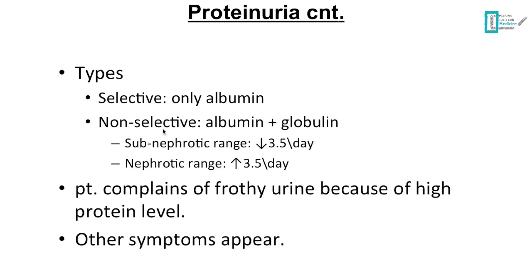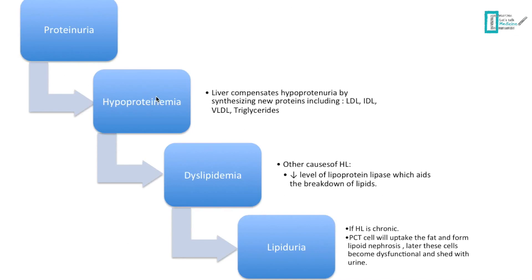When a patient develops non-selective proteinuria in the nephrotic range, other symptoms start to appear. Proteinuria leads to hypoproteinemia — low protein in the blood. As a compensatory mechanism, the liver starts producing more protein, including bad proteins — meaning lipoproteins. We will have low-density lipoprotein, intermediate-density lipoprotein, very low-density lipoprotein, and also triglycerides. So the patient will develop dyslipidemia. Another cause of dyslipidemia is a decrease in the level of lipoprotein lipase, an enzyme that aids in the breakdown of lipids — when it decreases, dyslipidemia develops.